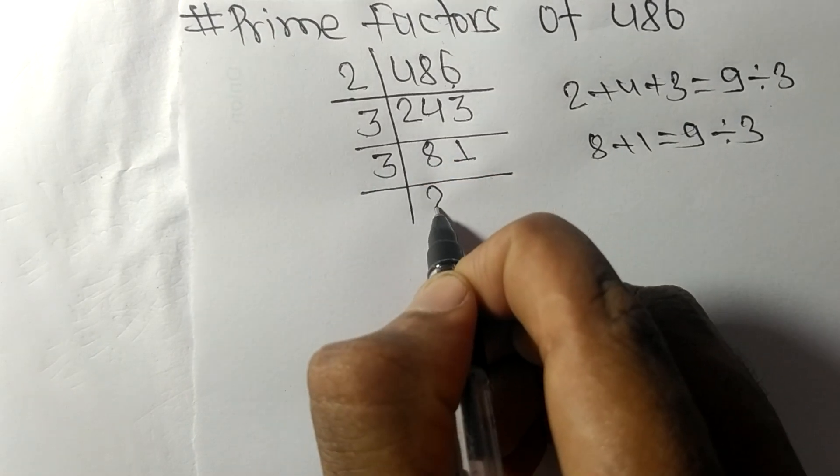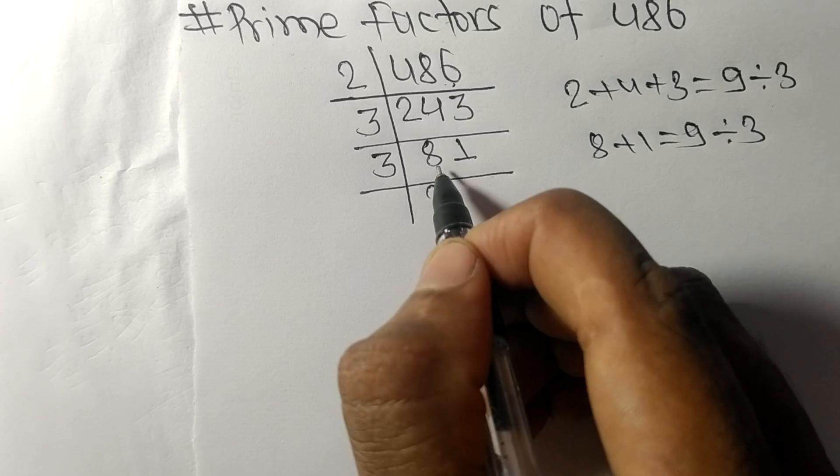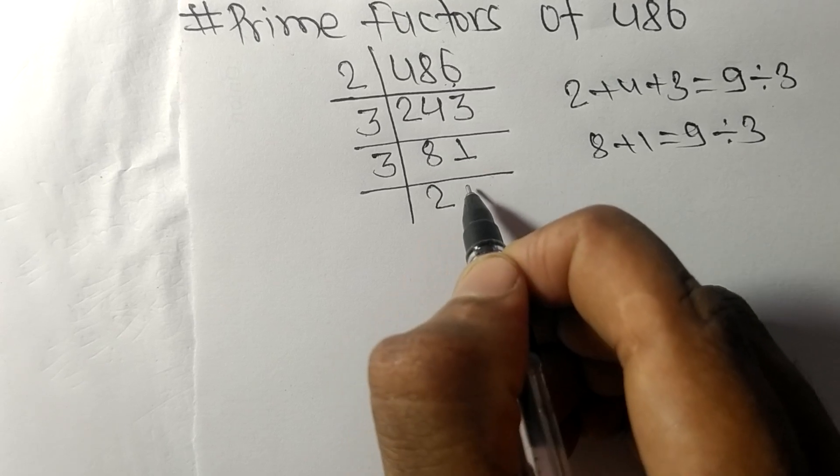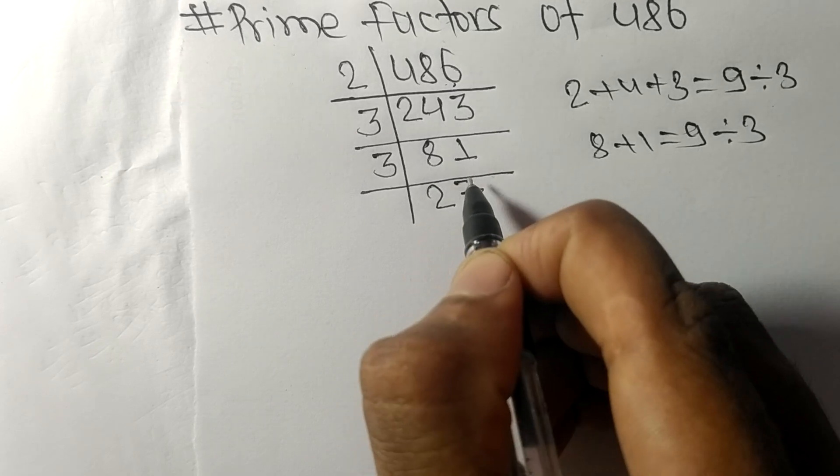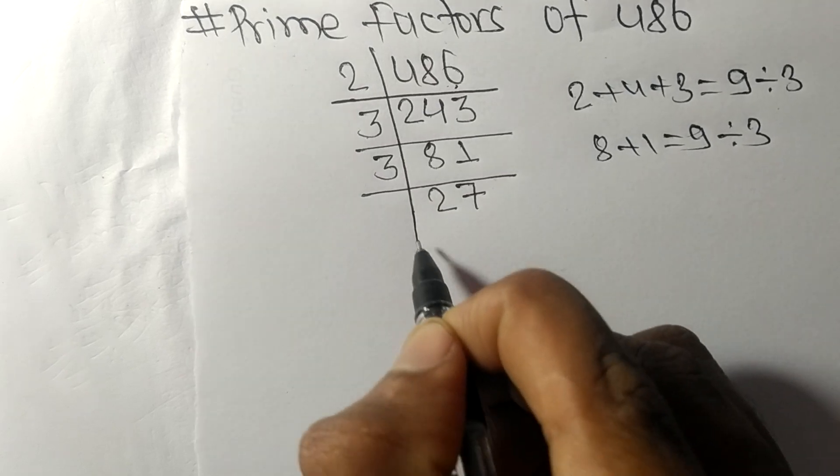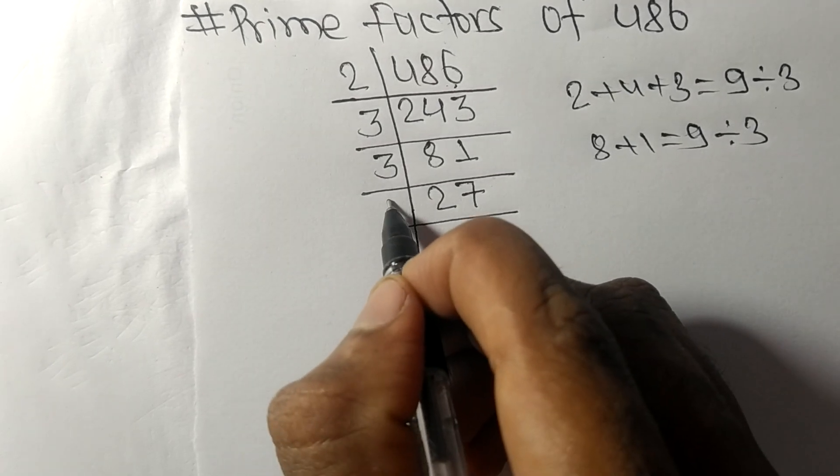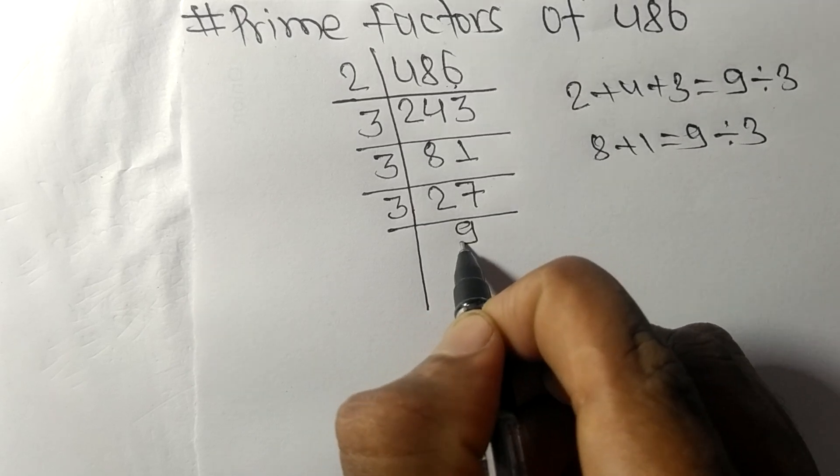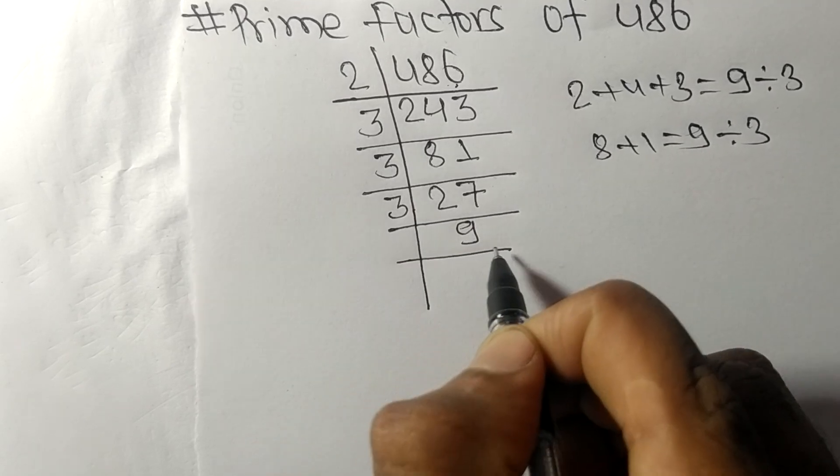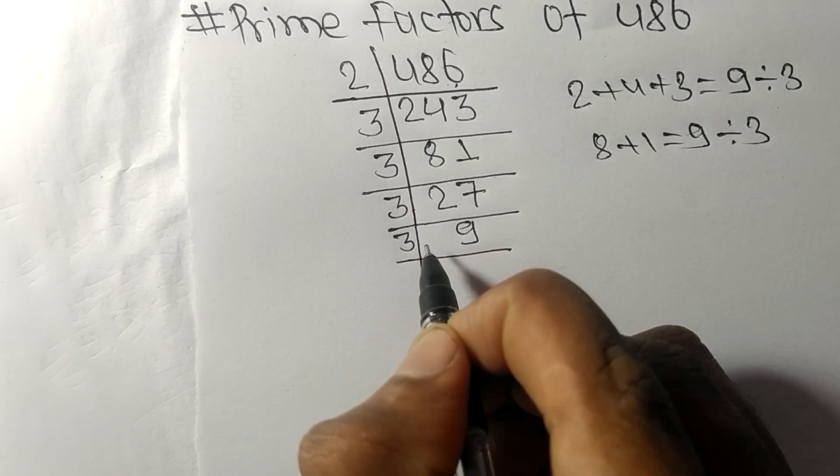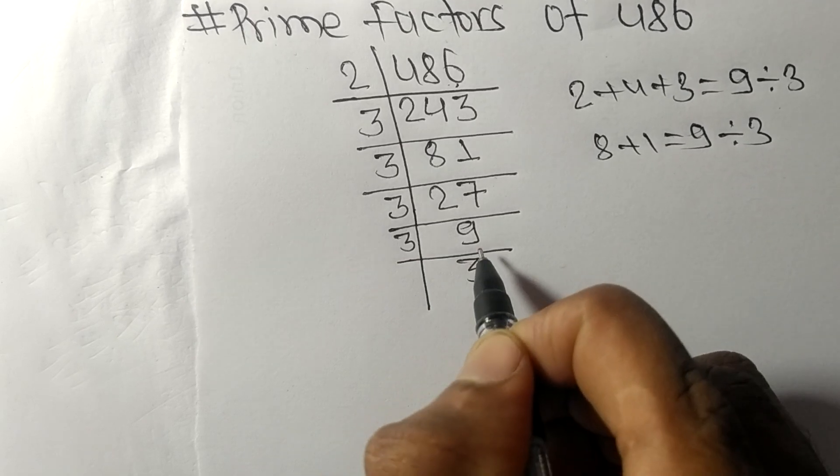3 times 2 means 6, remainder 2, 21. 3 times 7 means 21. Now we got 27, which is divisible by 3. 3 times 9 means 27. 9 divided by 3: 3 times 3 means 9.